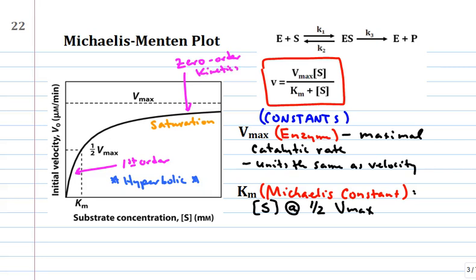If you look at the curve when it levels off, you know you have Vmax. The problem with the Michaelis-Menten plot is that experimentally it's difficult to know when you've actually leveled off, because the data points are somewhere along the curve and you're really kind of fitting it.